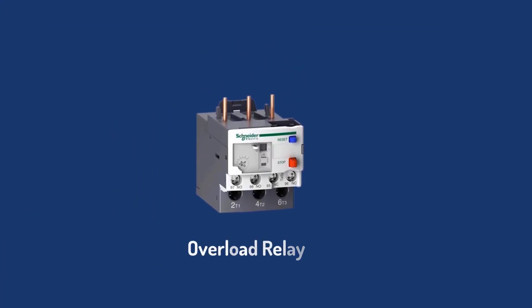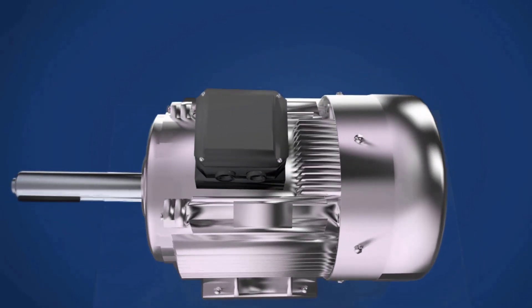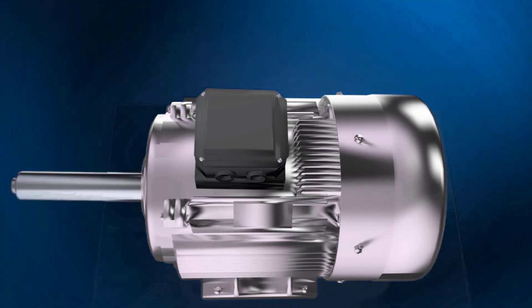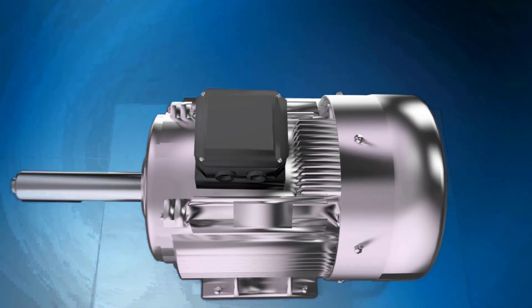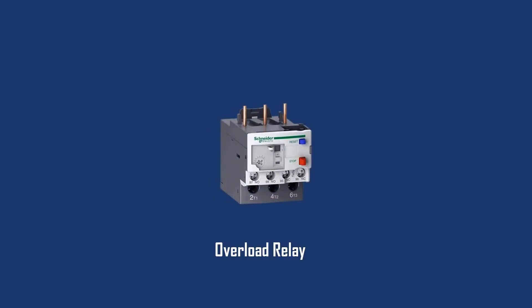Now let me explain what overload protection or overload relay is. We will be using overload protection relay when the motor draws excess current - this is an overload situation. This may cause overheating and damage the winding of the motor. Because of this, it's important to protect the motor, motor branch circuit, and motor branch circuit components from overload conditions.